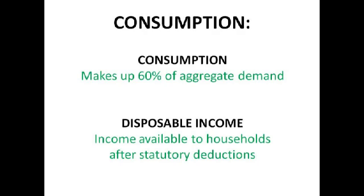Aggregate demand is made up of consumption, investment, government spending, and exports minus imports. When consumption, investment and government spending are equal to income, the economy remains in equilibrium. Arguably the most important component of aggregate demand is consumption, which makes up around 60% of aggregate demand — a useful figure to quote in essays, though it does vary slightly by source.